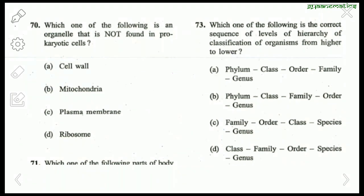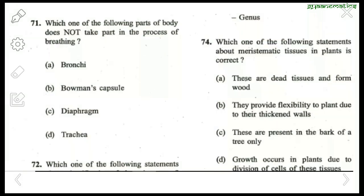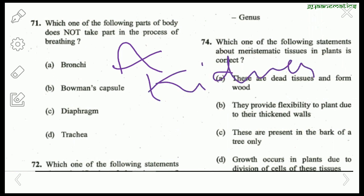Question 73: The correct sequence of hierarchy of classification from higher to lower level is Phylum, Class, Order, Family, then Genus. The right answer is A. Question 71: Which part does not take part in breathing? Bronchi are part of the lungs — involved in breathing. Bowman's capsule is present in the kidney and helps in purification of blood — not related to breathing. So the right answer is B — Bowman's capsule.